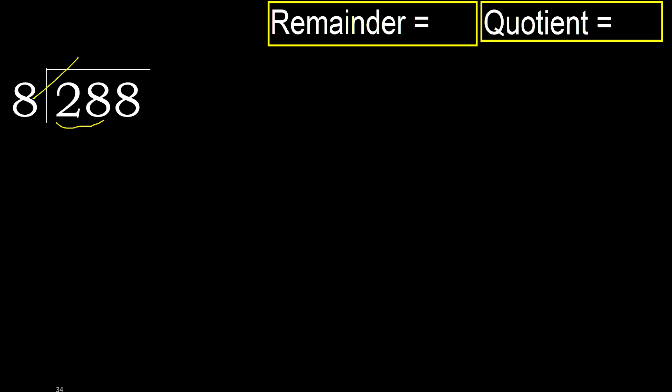8 multiplied by which number is nearest to 28 but not greater? 8 multiplied by 4 is greater; 8 multiplied by 3 is 24, which is not greater. 28 minus 24 is 4. Next digit.